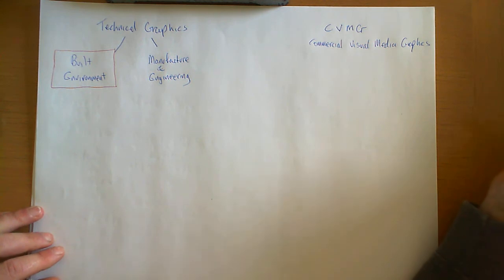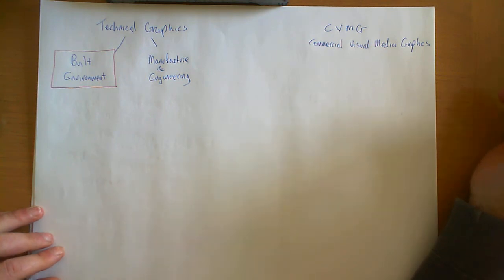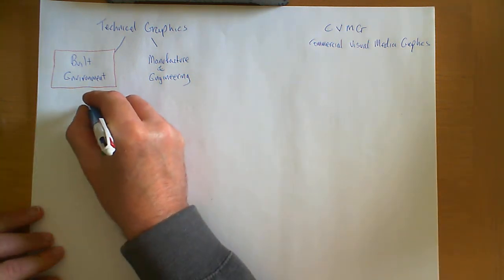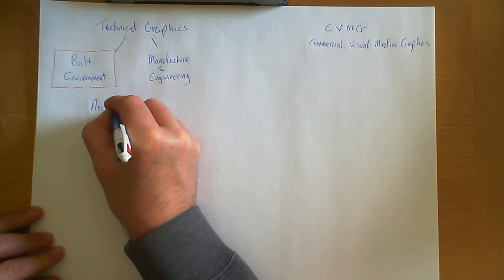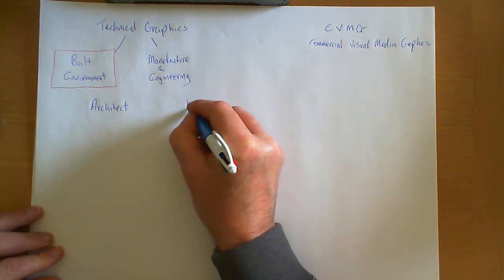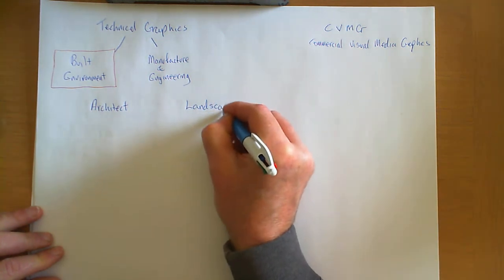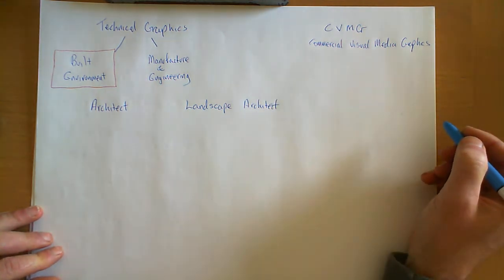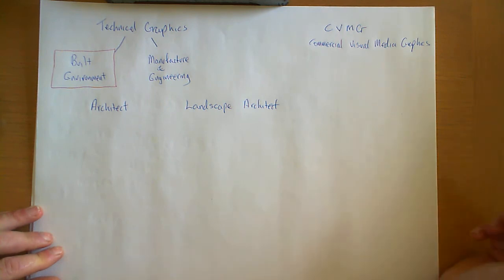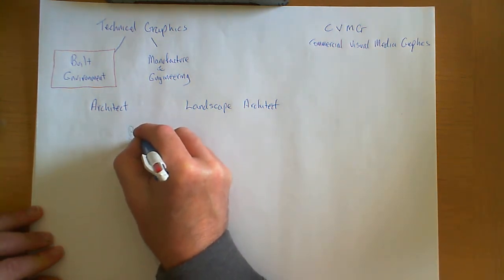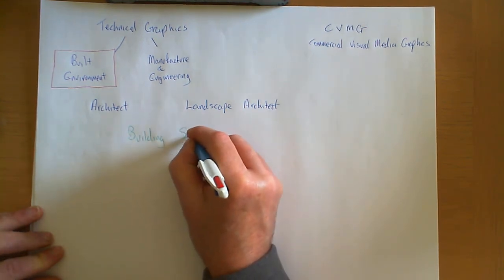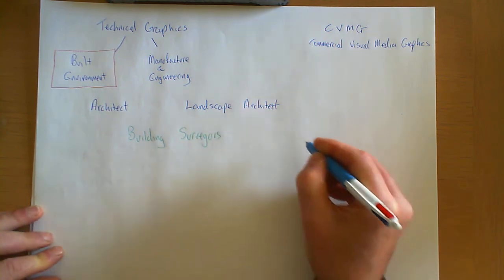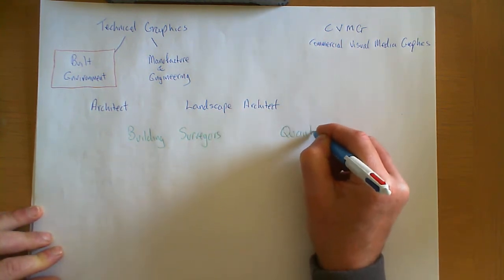Right now we are going to look at simply the Built Environment, and I am going to give you a list of job titles. The first on the list are architects, followed by landscape architects. We then have building surveyors and quantity surveyors.